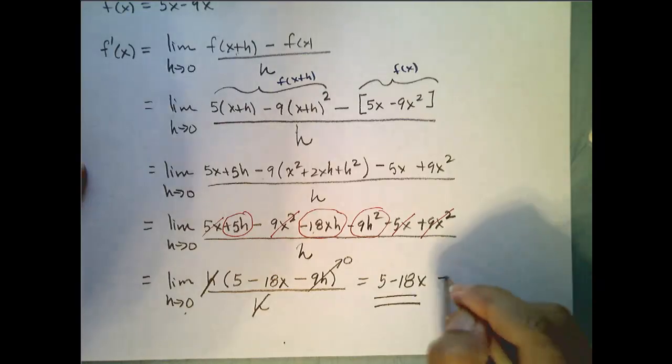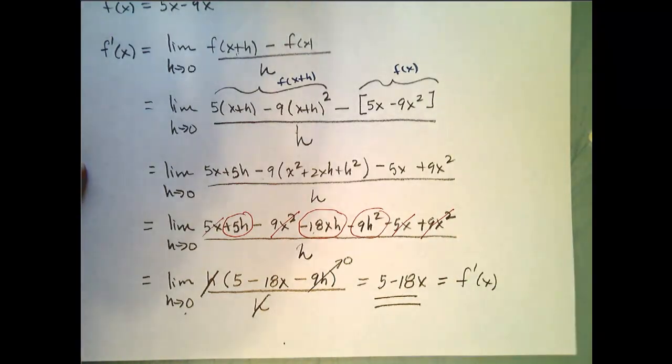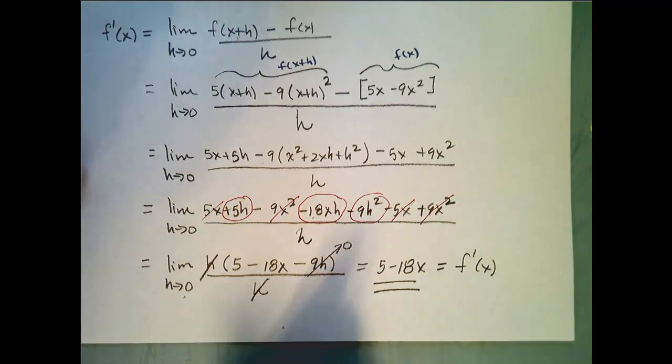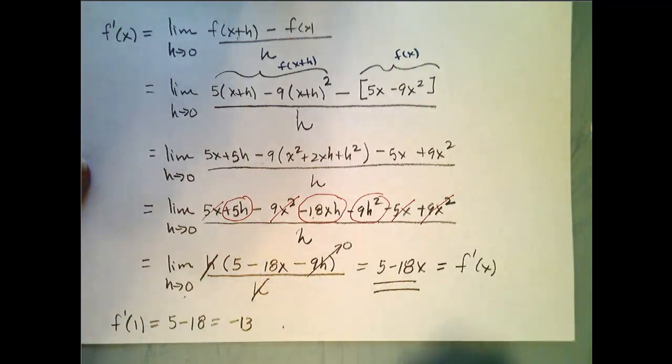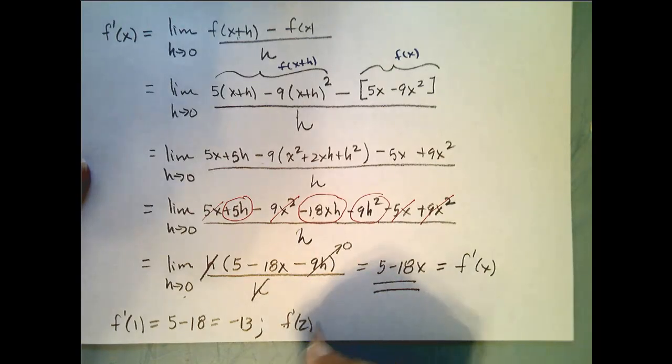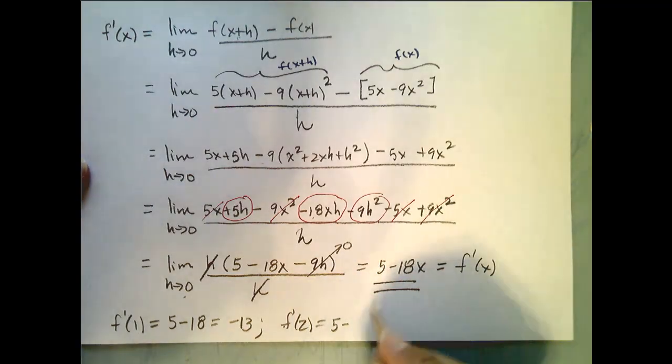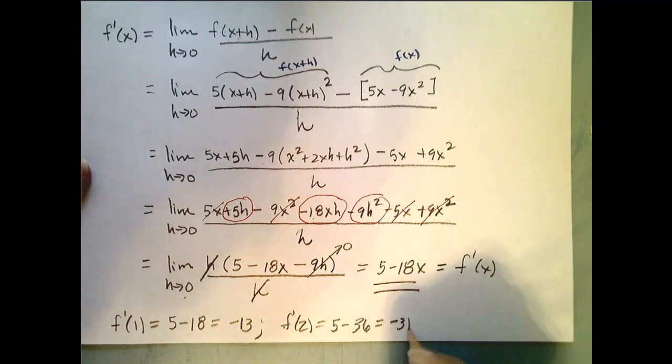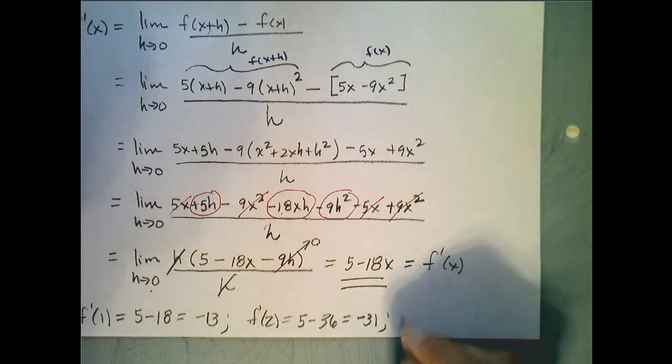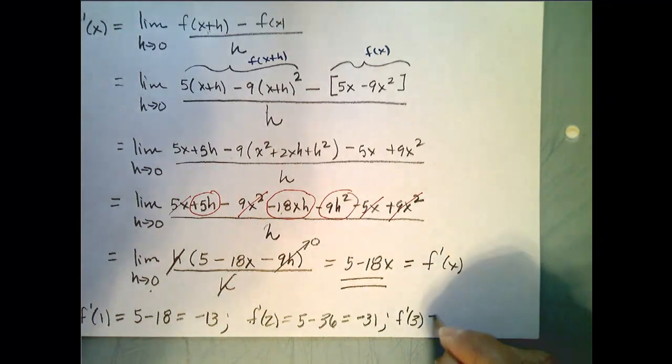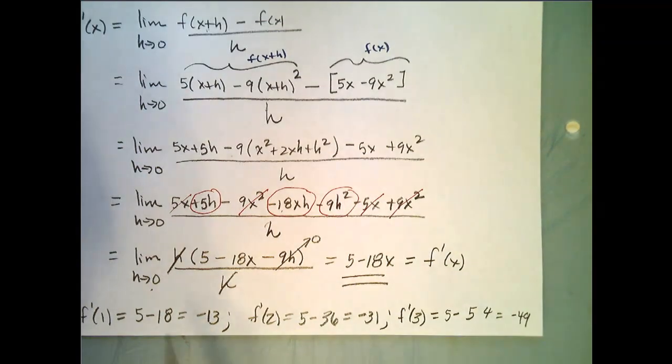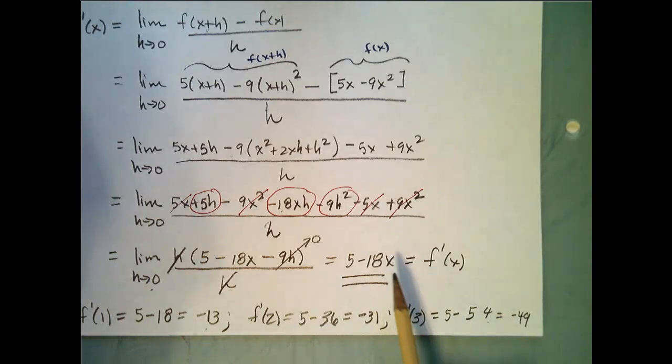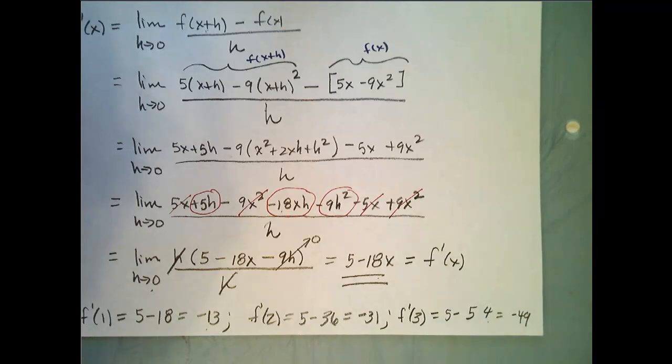And now I can easily answer the questions I asked at the beginning. f prime of 1 is 5 minus 18, or negative 13. Easy. f prime of 2 is 5 minus 18 times 2, which is 36, so minus 31. Let's just do one more for good measure, to see how wonderful it is that we only had to take the limit one time. This is 5 minus 54, which is negative 49. Now these were easy to calculate after I had evaluated the derivative function. Now go practice.